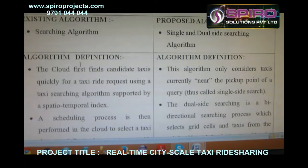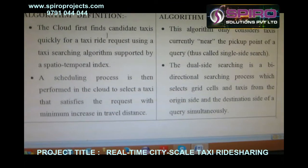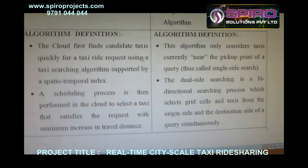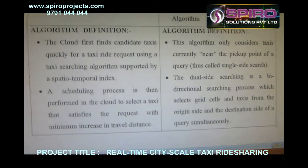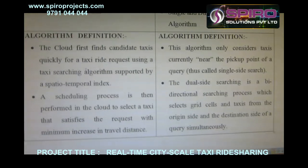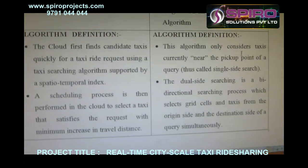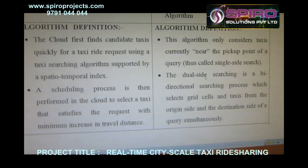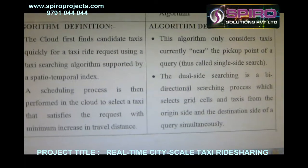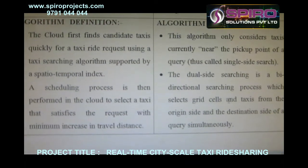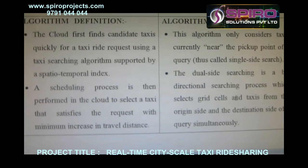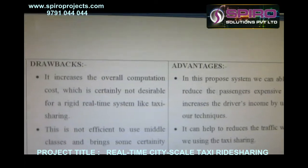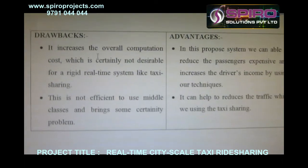In the existing system, the cloud first finds candidate taxis quickly for taxi ride sharing using a taxi searching algorithm supported by a spatio-temporal index. In the proposed system, this algorithm concerns taxis currently near the pick-up point of a query. The dual side searching is a bidirectional search process which selects grid cells and taxis for the origin and destination of the query.